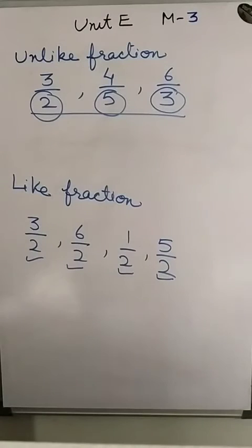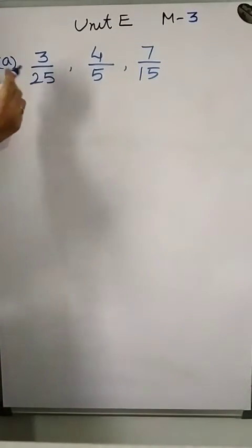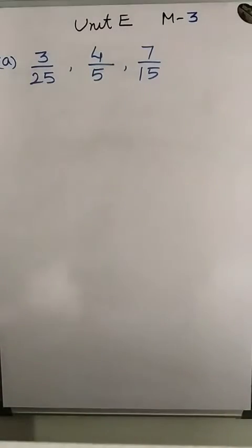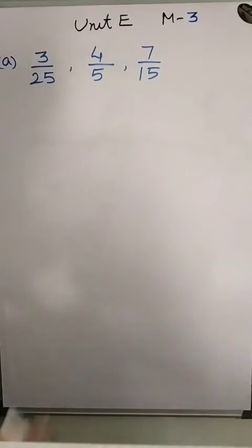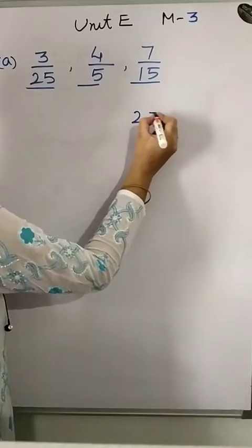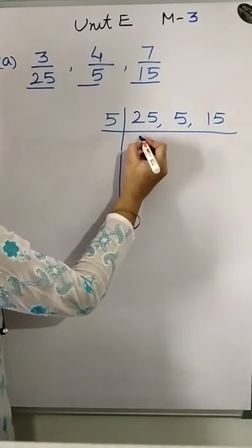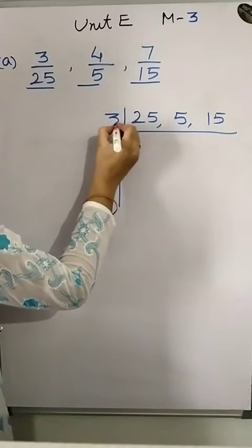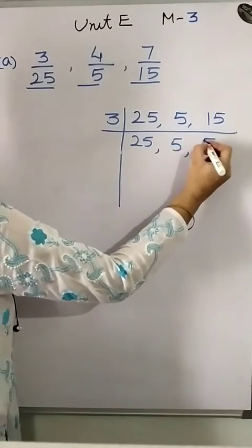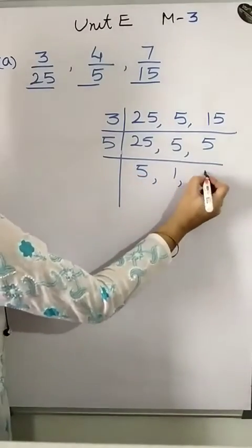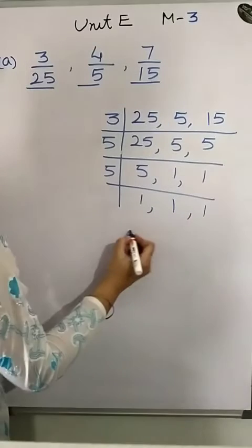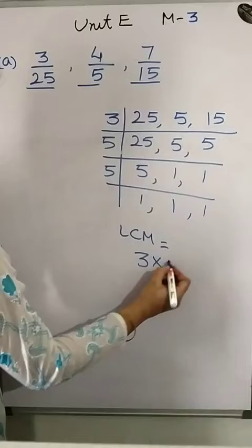Now we convert unlike fractions into like fractions. The question has 3 upon 25, 4 upon 5, and 7 upon 15 — these have different denominators, so they are unlike fractions. To convert, first find the LCM of the denominators 25, 5, and 15 using the division method. We divide by 3, then by 5, giving LCM = 3 × 5 × 5.